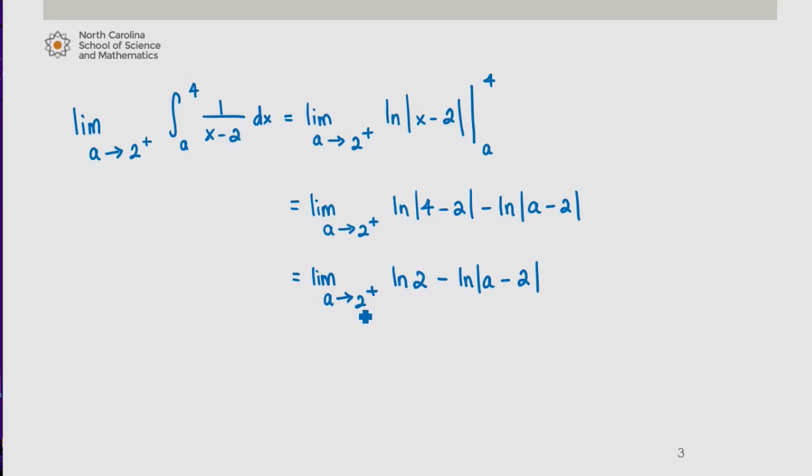Now let's take a look as a approaches 2 from above, a minus 2 is going to be between 0 and 1. So as a approaches 2 from above, this value approaches 0 from above, and we know that the behavior of the natural log graph is that as we're approaching 0 for the argument value, natural log of that approaches negative infinity. Since we're subtracting this off, this gives us positive infinity, so this integral diverges.